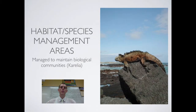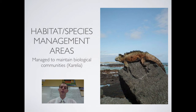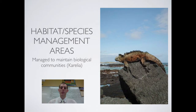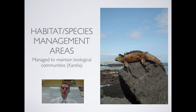Then there's a habitat or species management area, managed to maintain biological communities. In these areas, hunting might be promoted to keep a predator population down, or discouraged to protect animals; logging could be encouraged or discouraged depending on the goal. These areas are set aside for protecting a specific habitat or species. Examples include Karelia in Russia — a large protected Arctic habitat — and the Galapagos Islands, where the entire area is protected to preserve the unique species and habitat there.